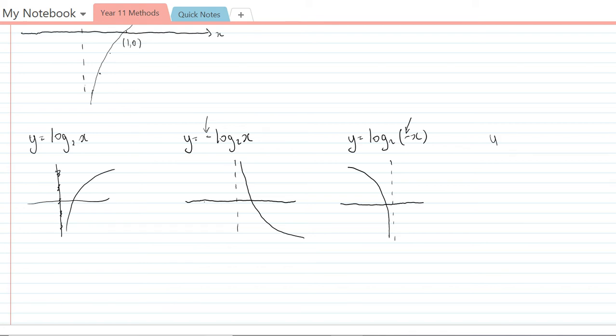The fourth variation is if we have negative log base 2 of negative x, so this has both the reflection in the x-axis and the reflection in the y-axis. Drawing this graph out, it would look something like this where it's reflected in both axes. So those are the four different shapes that we can have, and it's just really important to consider those different transformations on the shape of the graph.